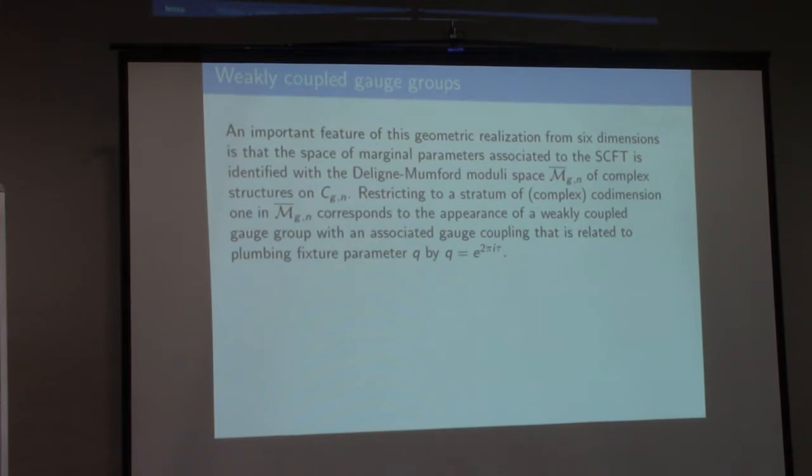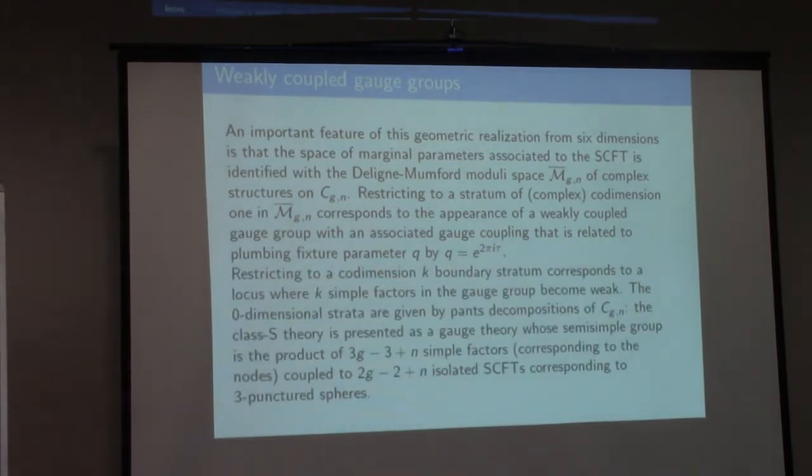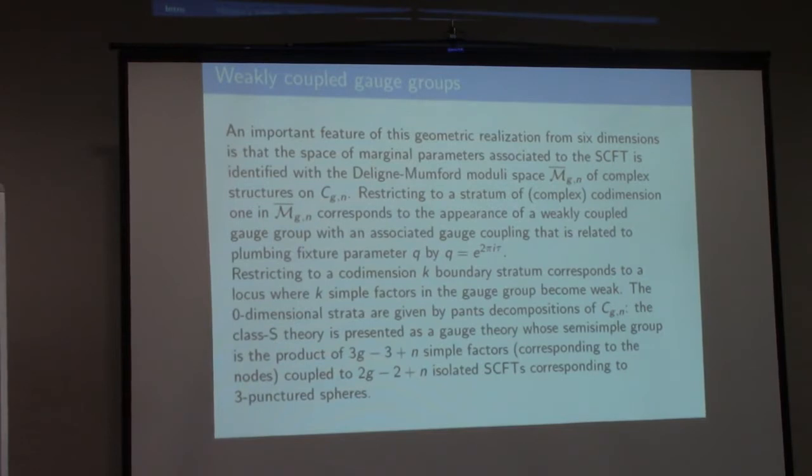A crucial feature of this geometric realization from six dimensions is that you see what the moduli space is: the moduli space of the theories is the moduli space of Riemann surfaces. More carefully, it's the Deligne-Mumford compactification of the moduli space of punctured Riemann surfaces. When you restrict to a codimension-one boundary stratum, the physicists see a weakly coupled gauge group.